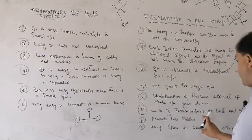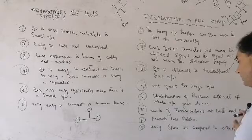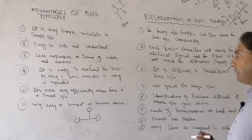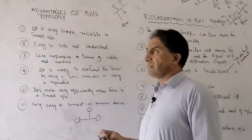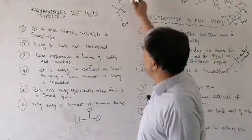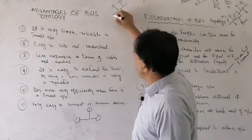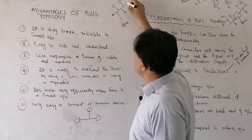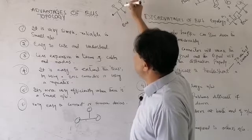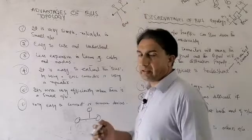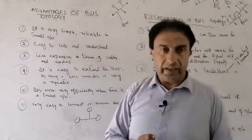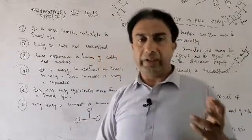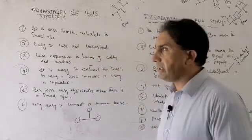The seventh disadvantage is that terminators are needed at both ends of the network. Without terminators at both ends of the bus cable, the signal travels without any boundary check, which is a main drawback of bus topology.